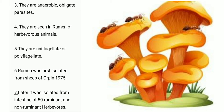Point 4: They are seen in the rumen of herbivorous animals. They are uniflagellate or polyflagellate, meaning they have one flagella or many flagella. The rumen was first isolated from sheep by Orpin. The rumen is the first stomach in ruminants, which have compartments in their stomach — for example, goats, sheep, etc.